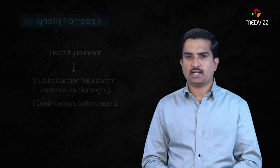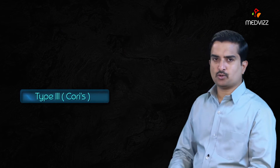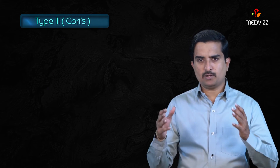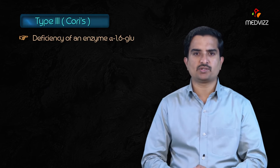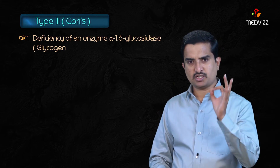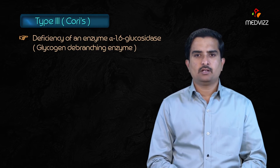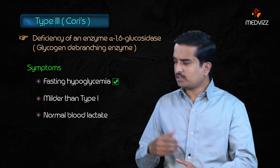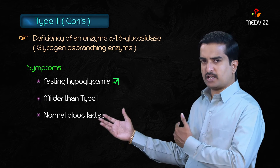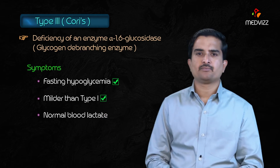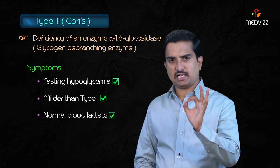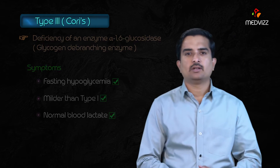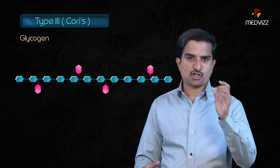Type 3, Cori's disease, involves a defect in alpha-1,6-glucosidase, which is the glycogen debranching enzyme. Symptoms include fasting hypoglycemia, similar to Von Gierke's but in a milder form. Normal blood lactate levels are seen, whereas in Von Gierke's blood lactate levels are elevated.